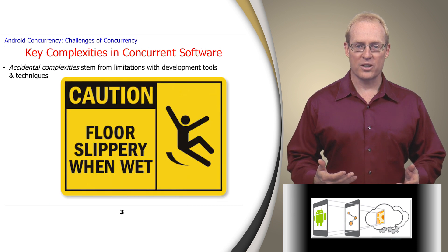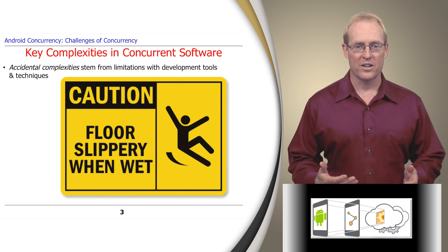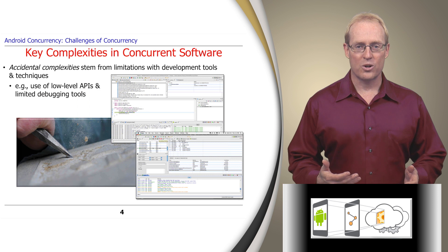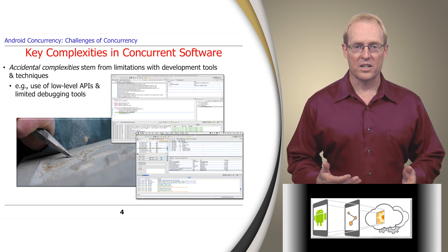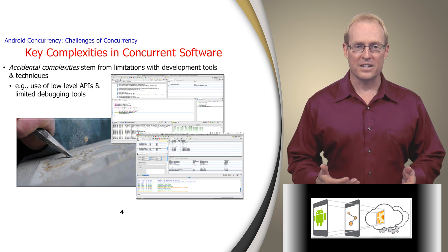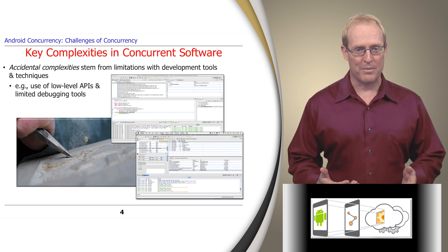Some of these challenges are called accidental complexities, which arise from limitations with the tools, techniques, and methods we commonly use to build software. For example, concurrent programs are often written using low-level application programming interfaces written in languages like C, and debugged using tools that aren't well-equipped to detect common hazards of concurrent programming. All too frequently, these problems are self-inflicted, because we don't always have to use these tools, techniques, and methods — it's often just conventional wisdom or common practice.